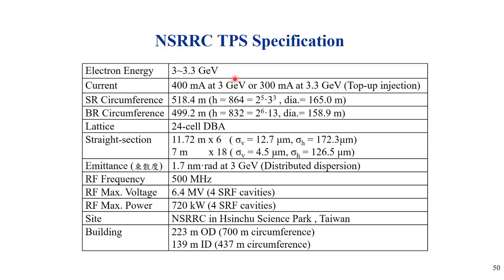The new Taiwan Photon Source operates at 3.3 GeV — compared to the old 1.5 GeV — with a current of 400 milliamps. The RF power is 720 kilovolts to accelerate particles, and the maximum RF voltage is 6.5 megavolts. The building outer diameter is 223 meters and inner diameter is 139 meters, quite different from the old facility.